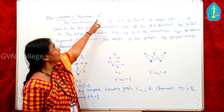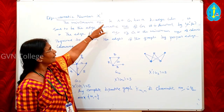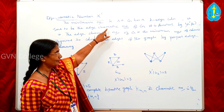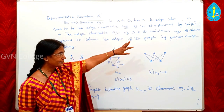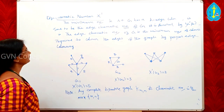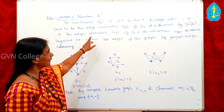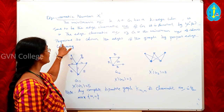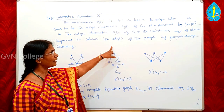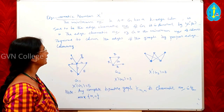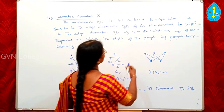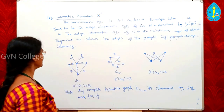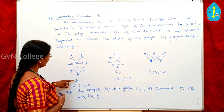Now we will see the edge chromatic number of a graph, denoted by χ'(G). The edge chromatic number is the minimum number K such that G has a proper K edge colouring. It is the minimum number of colours required to colour the edges of the graph by proper edge colouring.